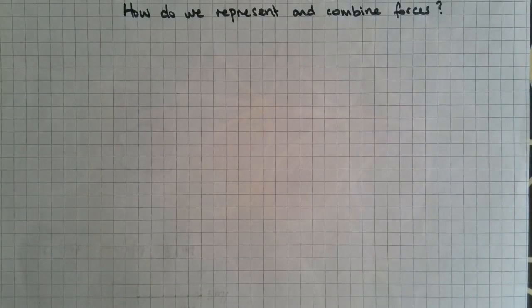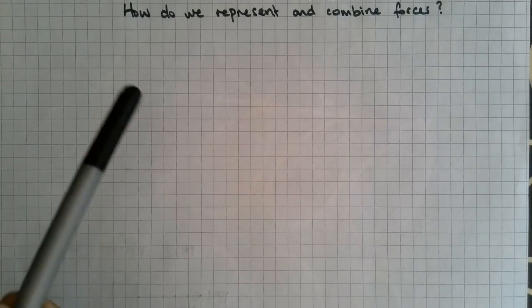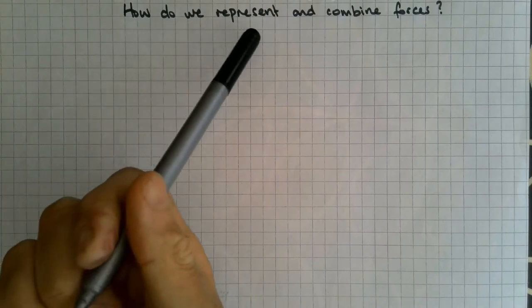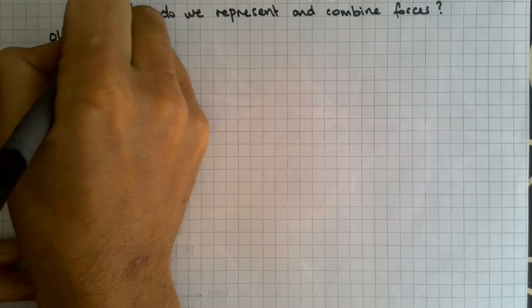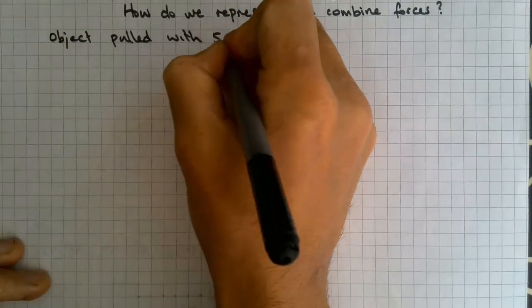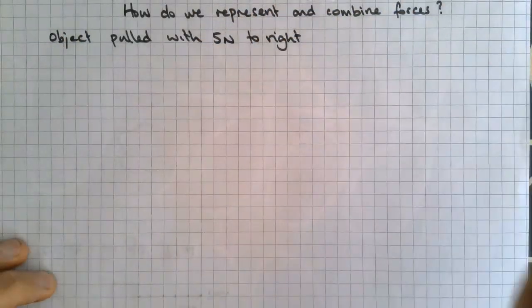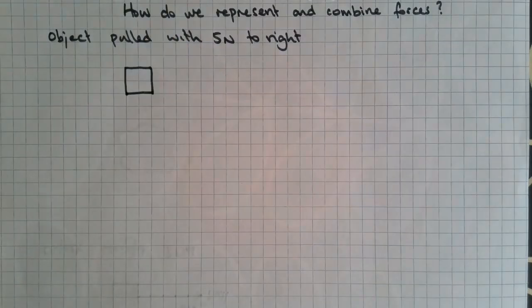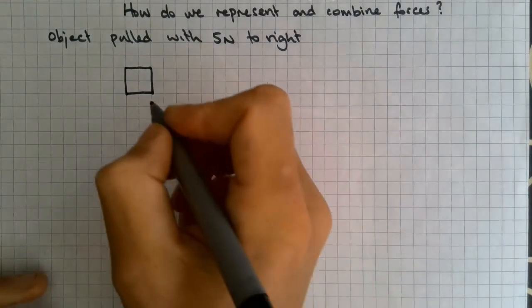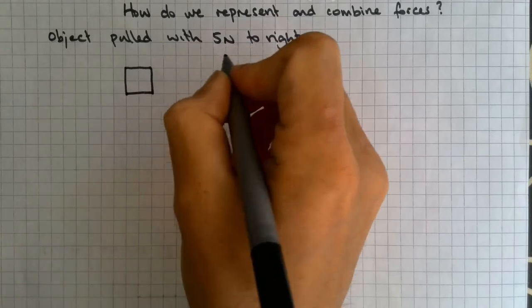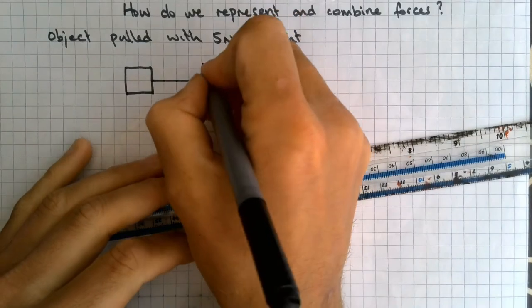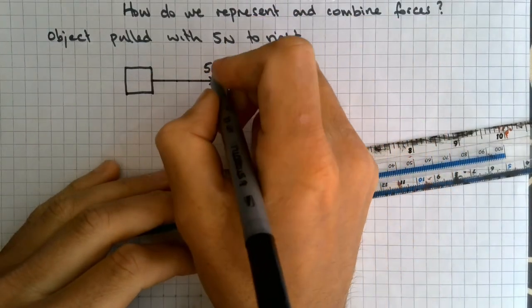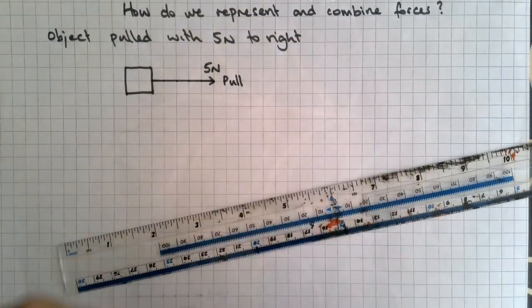So we're looking at vectors, and forces are a vector. The specific question we're looking at is: how do we represent and combine forces? Let's take an object, and we're told that it's being pulled 5 newtons to the right. Here's our object, and I'm going to use the squares on the paper for my scale. I'm going to say that 1 square is worth 1 newton. I've got my arrowhead to give the direction. 5 newtons is the magnitude, and a label to say that it's being pulled.